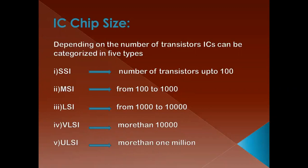The first one is SSI, second one is MSI, third one is LSI, fourth one is VLSI, and fifth one is ULSI. SSI means small scale integration, MSI means medium scale integration, LSI is large scale integration, VLSI means very large scale integration, and ULSI means ultra large scale integration.